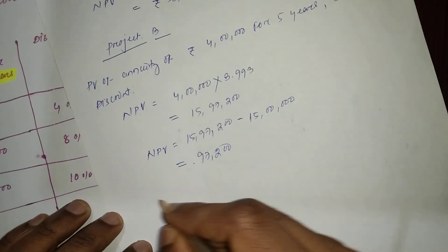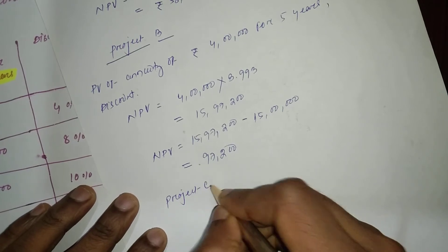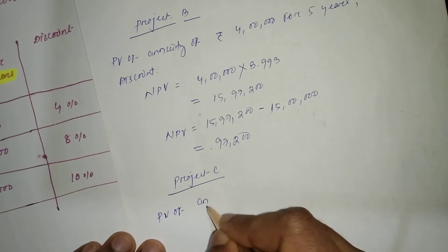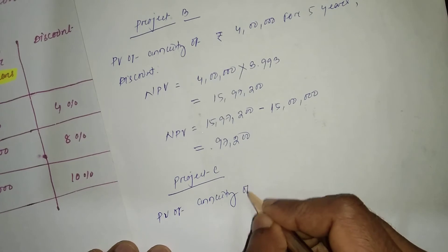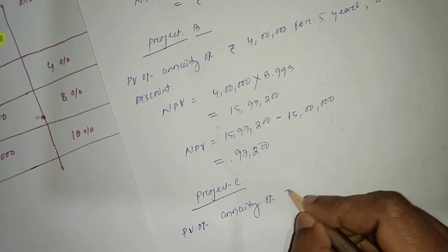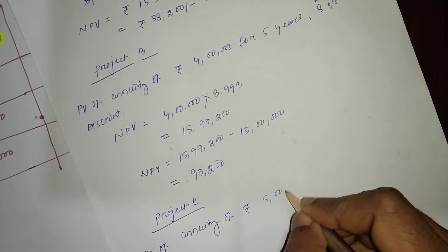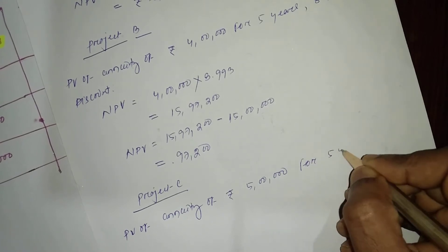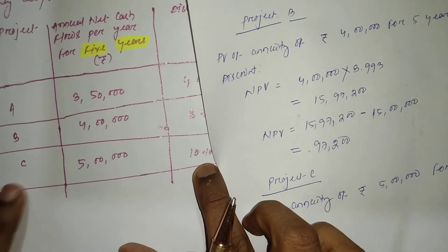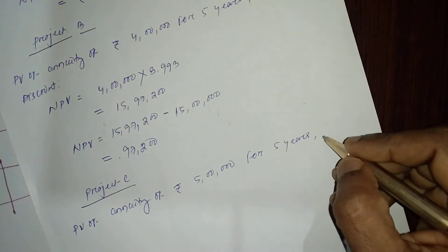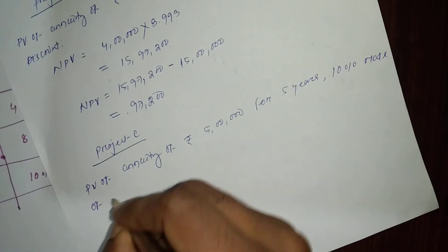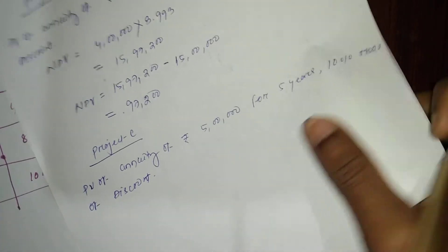For Project C likewise, present value of annuity of rupees five lakh for five years. Rate of discount is ten percent for Project C. So for five years with ten percent rate of discount, let's calculate.